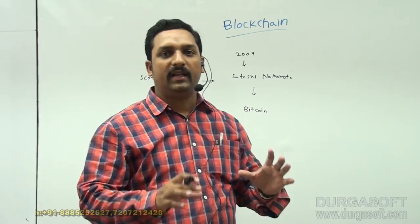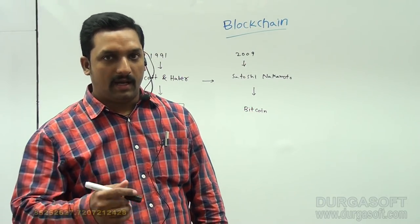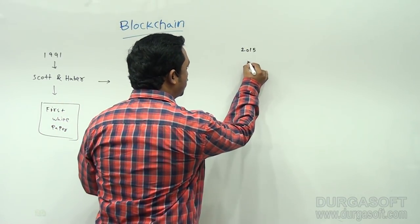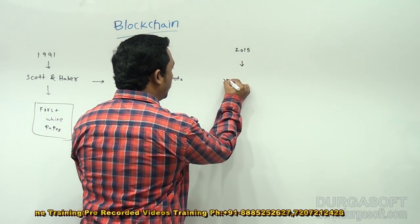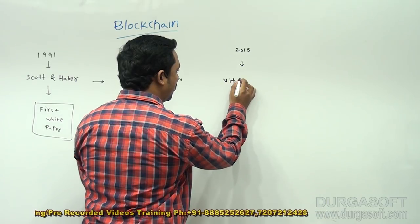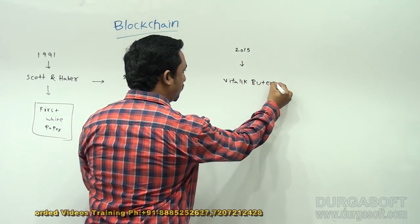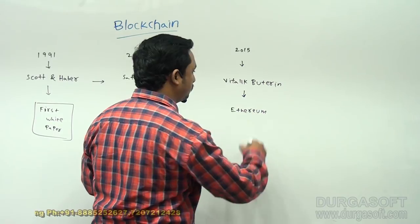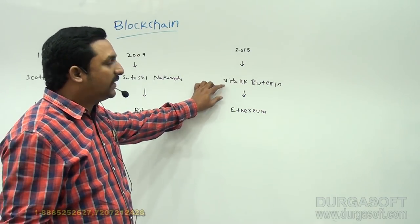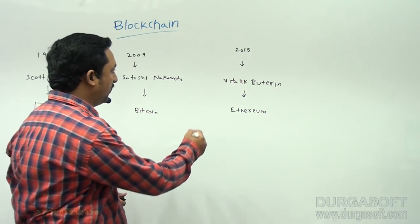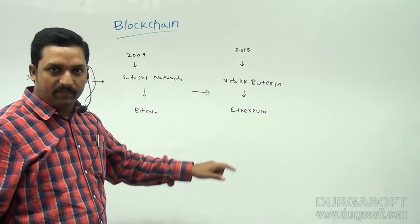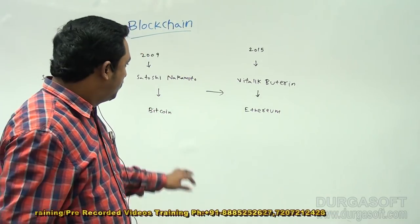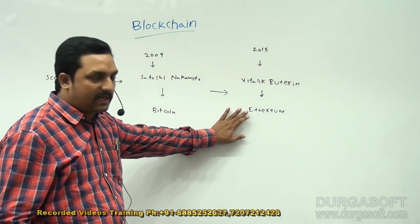After 2009, hundreds of implementations were done on blockchain technology. The next important milestone was in 2015 when the next-generation blockchain was implemented by Vitalik Buterin — this is Ethereum. Ethereum was developed by Vitalik Buterin in 2015 and became very popular. In between Bitcoin and Ethereum, hundreds of implementations were done, but they were not that different from Bitcoin. The new trendsetter is Ethereum.